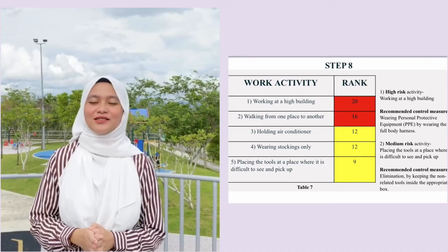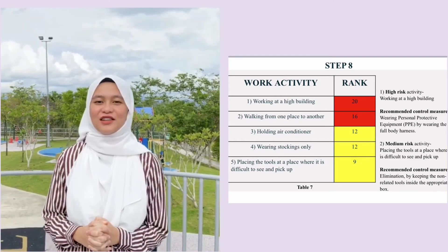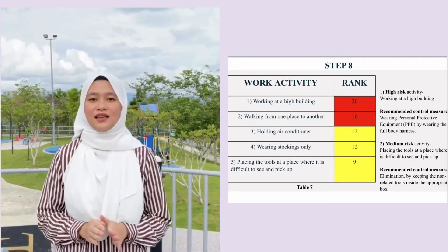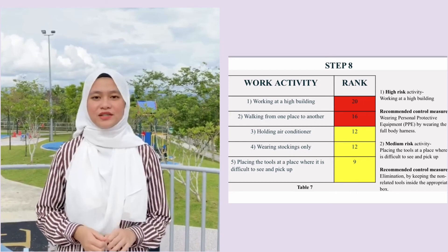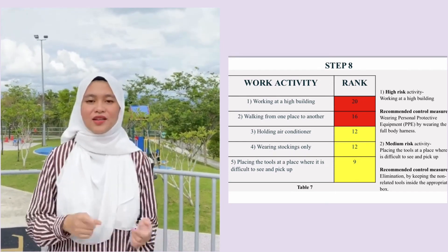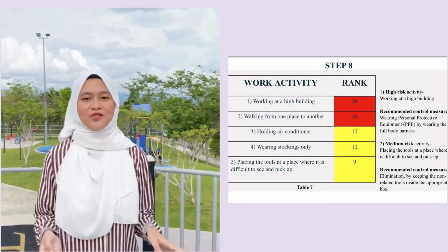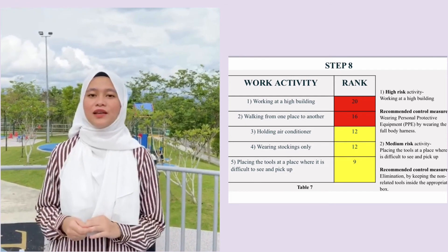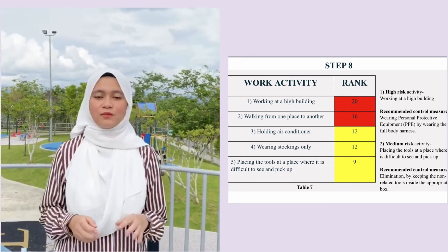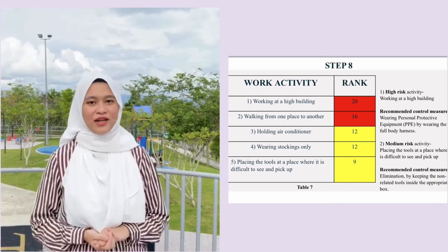Moving on to step eight, Table seven shows the ranking of activities from the riskiest to the least risky. In this step, the recommended control measure is based on the highest risk activity and the lowest risk activity. For example, working at a high building is the highest risk activity and the recommended control measure is wearing PPE with a full body harness.